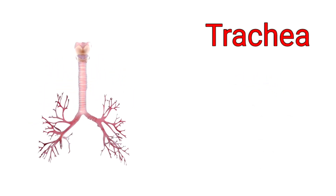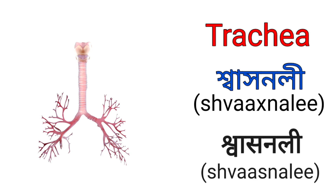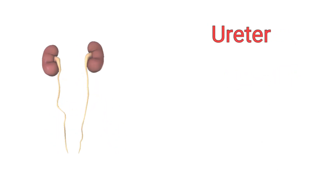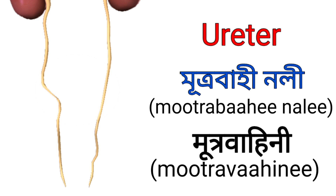Trachea. It's called Sakhnoli in Assamese and it's called Swasnoli in Hindi. Ureter. It's called Mutra Vahinoli in Assamese and it's called Mutra Vahini in Hindi.